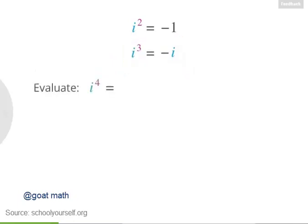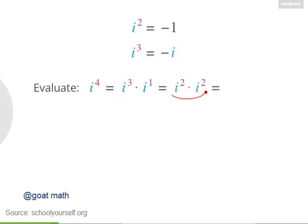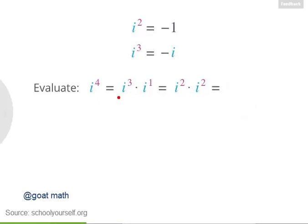Next, try evaluating i to the fourth power. You can get the answer by writing this as i cubed times i to the first, and also by writing it as i squared times i squared. Either way, you should get the same result. Let's quickly review both ways to get the answer. You already found that i cubed is negative i, and i to the first is i.